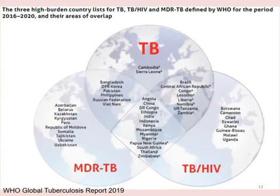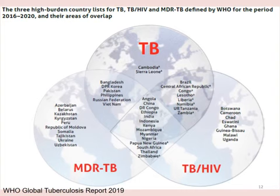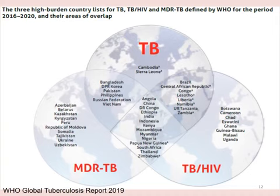A diagram of high-burden countries shows the problem of TB load, drug-resistant TB load, and TB combined with HIV. South Africa is one of the countries with all three problems simultaneously, so we need to tackle both TB and HIV at the same time to get on top of tuberculosis.